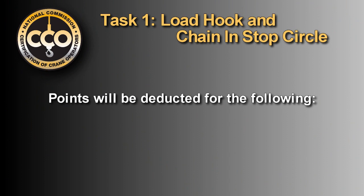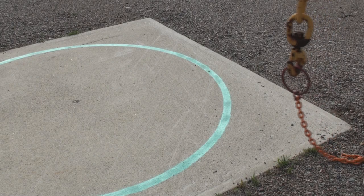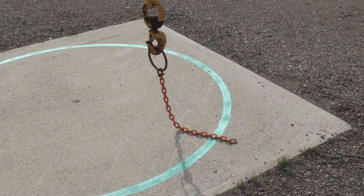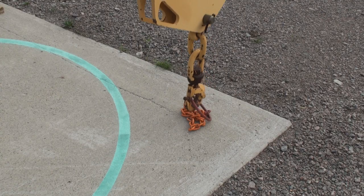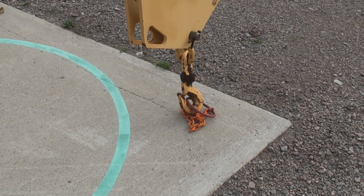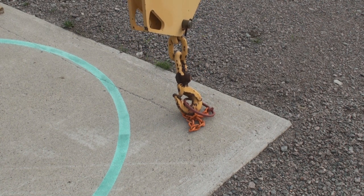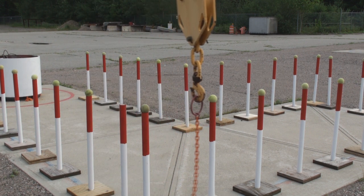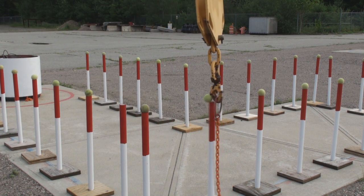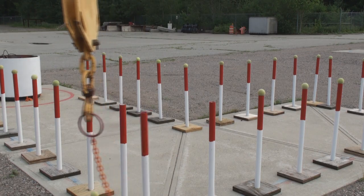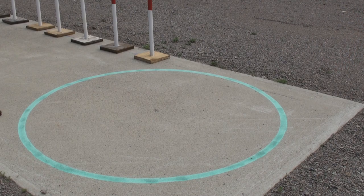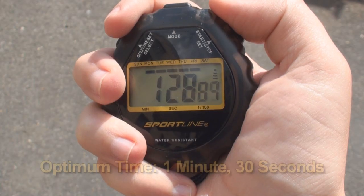Points will be deducted for the following: dragging or contact of the chain outside of the circle; hook or block touching the ground, either inside or outside of the circle; hook, block, or chain contacting any part of the course or crane; lifting the chain off the ground after initial contact with the ground inside the circle; and exceeding optimum time.